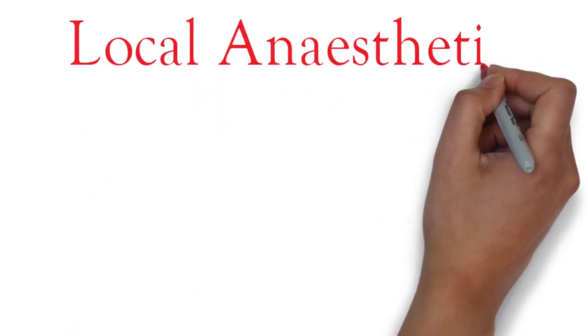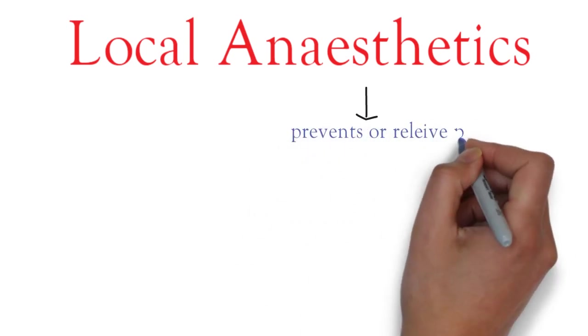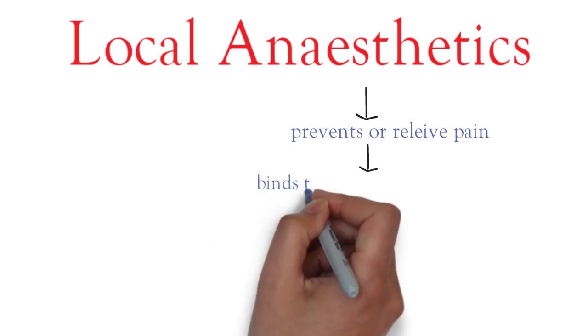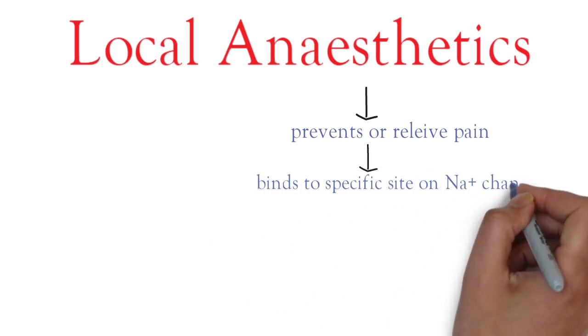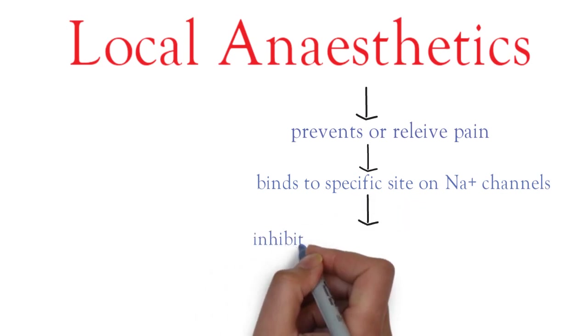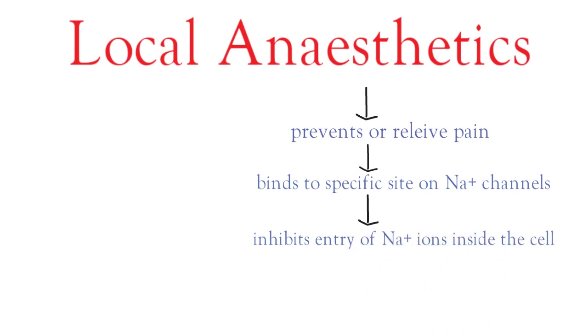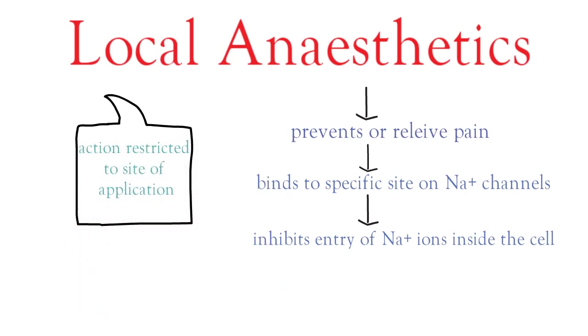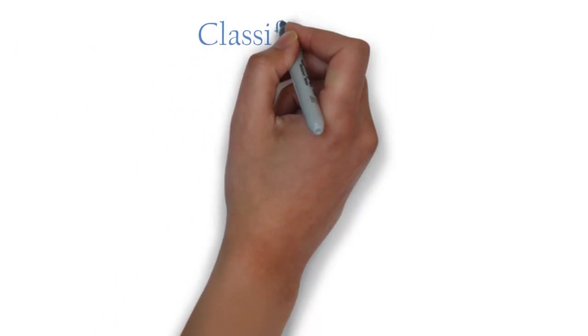Hello everyone. In this video we are going to study about local anesthetics, covering their mechanism of action along with a little bit of chemistry. These are agents which prevent or relieve pain. Their mechanism is to interfere with impulse conduction by acting on a specific site on sodium channels, inhibiting the entry of sodium ions inside the cell. The word 'local' defines that their action is restricted to the site of application.